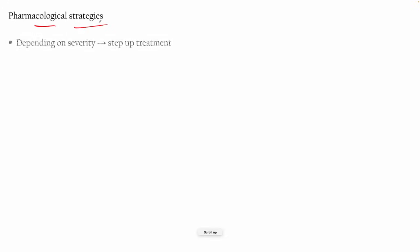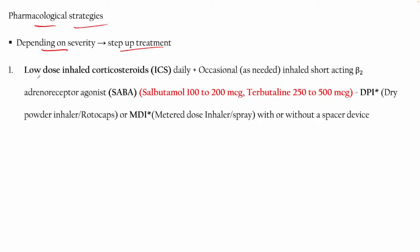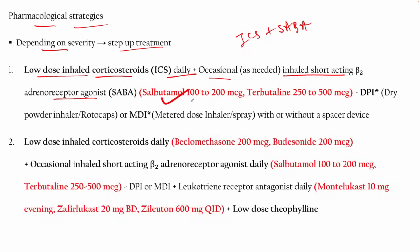Now the pharmacological strategies. These are divided into various steps and groups as per guidelines depending on severity, and we will increase step by step starting from the patient's condition. Step 1 is low-dose inhaled corticosteroids (ICS) daily plus occasional as-needed inhaled short-acting beta-2 agonists (SABA).